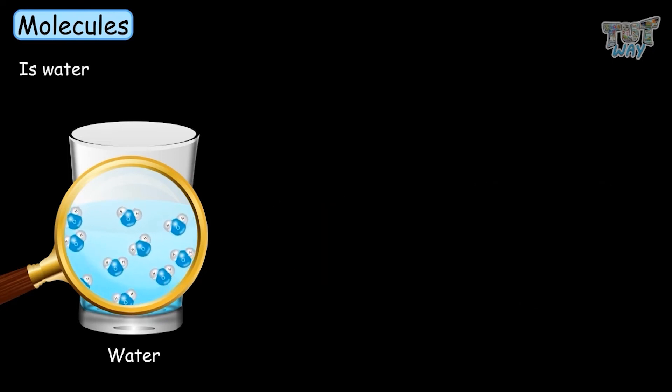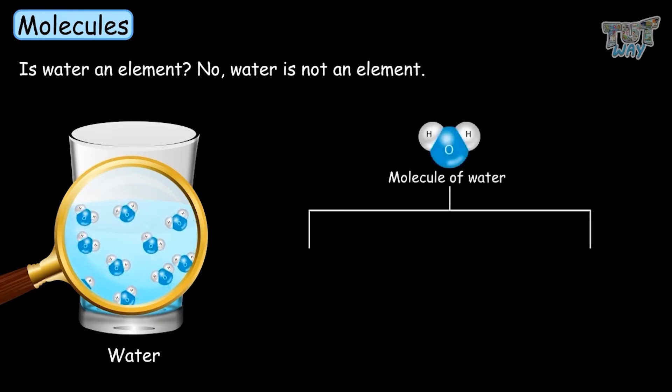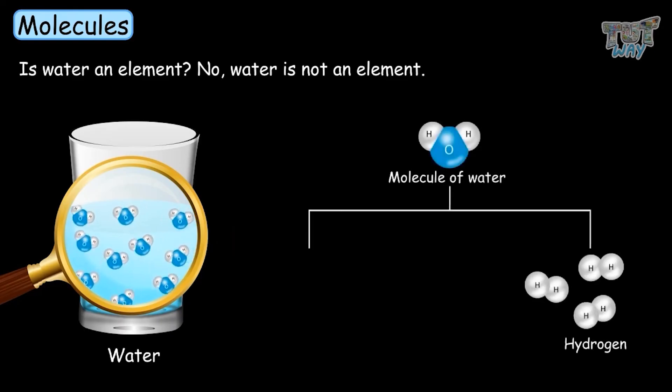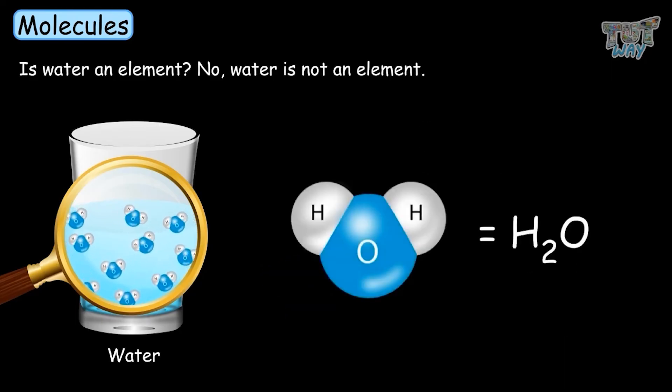So is water an element? No, water is not an element. Water is a type of matter that has two types of atoms, hydrogen and oxygen, and they exist as molecules. Each molecule has a composition H2O.